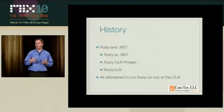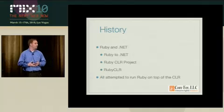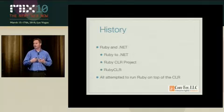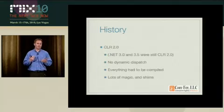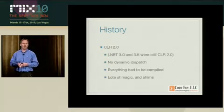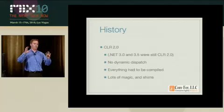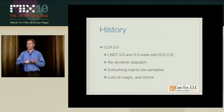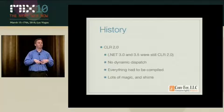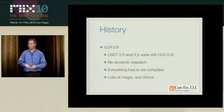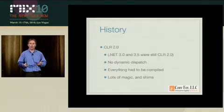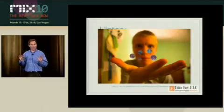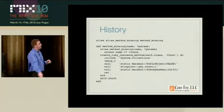The challenge all of these projects had — and why it was so difficult to gain traction — was that they were trying to run on top of CLR 2.0, which is very difficult for a dynamic language. There really isn't a lot of dynamism in CLR 2.0. For clarity: CLR 1.1, CLR 2.0, and CLR 4.0 are runtimes. .NET 3.0 and 3.5 were base class libraries added on top of CLR 2.0. With .NET 4.0 we have a new runtime. In CLR 2.0, everything had to be compiled.